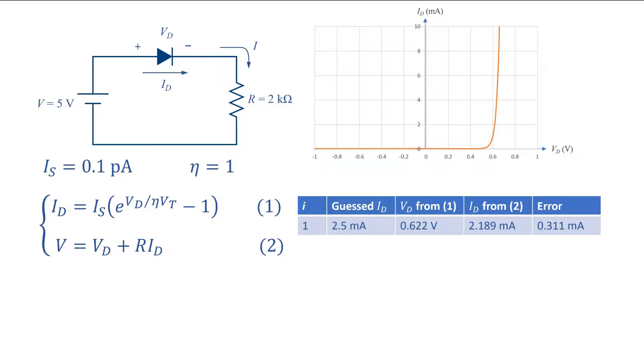Here I have guessed a value of 2.5 mA for id. I have calculated this value assuming an ideal diode. It is a short circuit, so the current is simply 5V divided by 2 kΩ or 2.5 mA. Then I use this value of id in equation 1, the diode equation, and find the diode voltage of 0.622 volts.